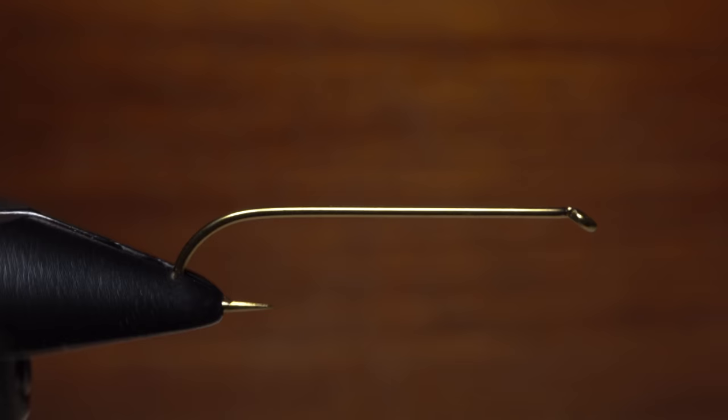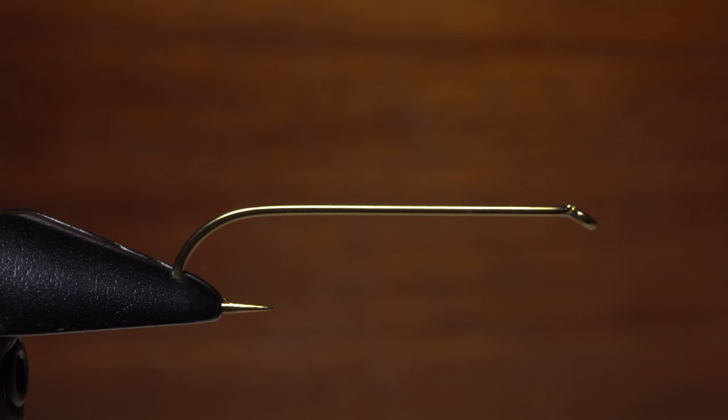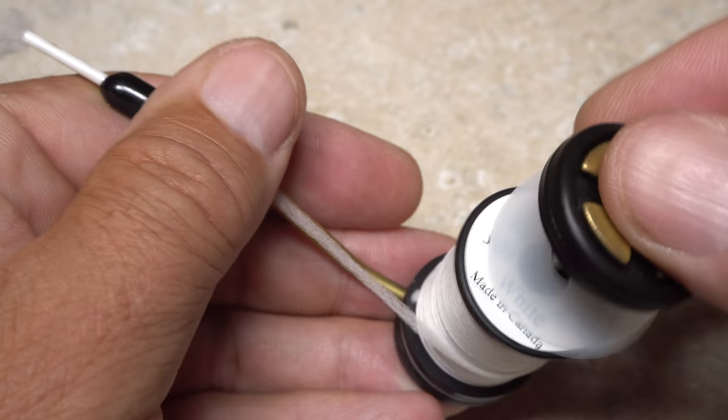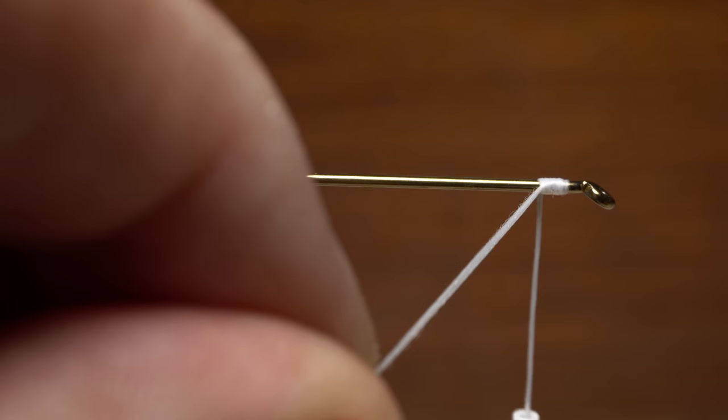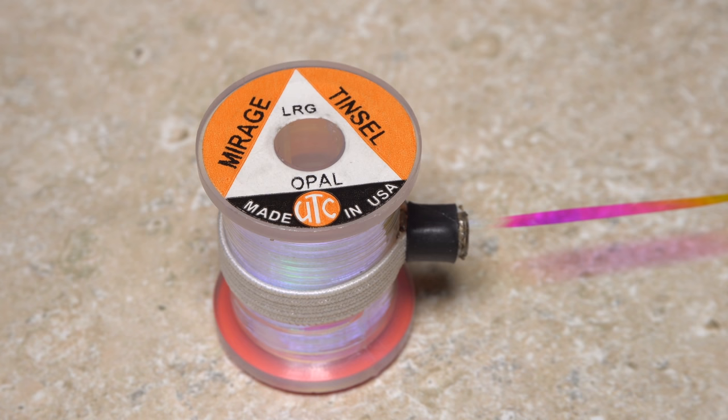Begin by getting the hook firmly secured in the jaws of your tying vise. If you're using a rotary vise, check to make sure the shank is roughly in line with the axis of rotation. Load a bobbin with a spool of white unistretch. It'll be used to create the underbody of the fly. Get the unistretch started on the hook shank, leaving a little space behind the eye, and take a half dozen or so wraps rearward before snipping off the excess tag.